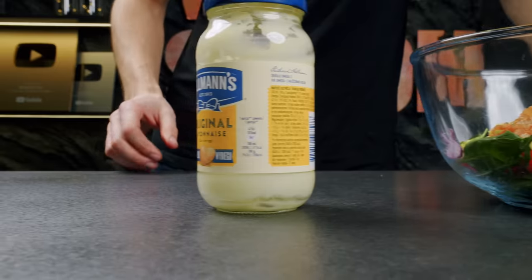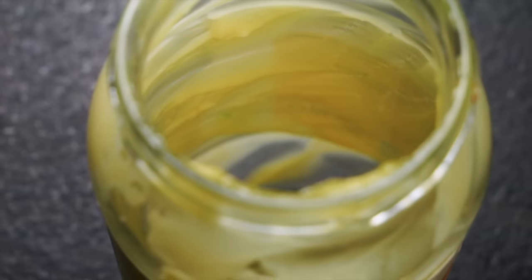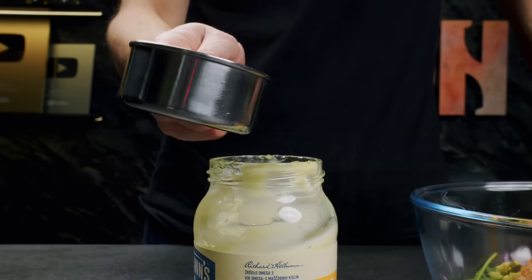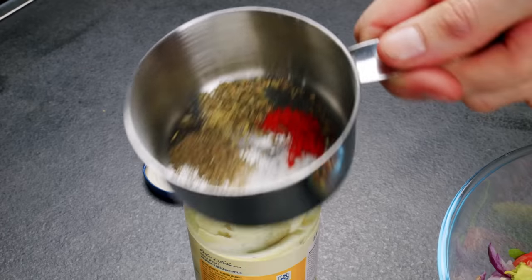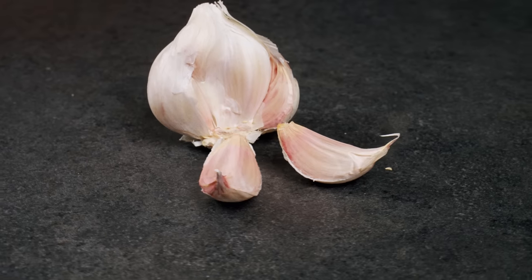Now it's time to make the salad dressing. I take a leftover jar of mayonnaise and add oil, vinegar, salt, pepper, herbs de Provence and garlic to it.